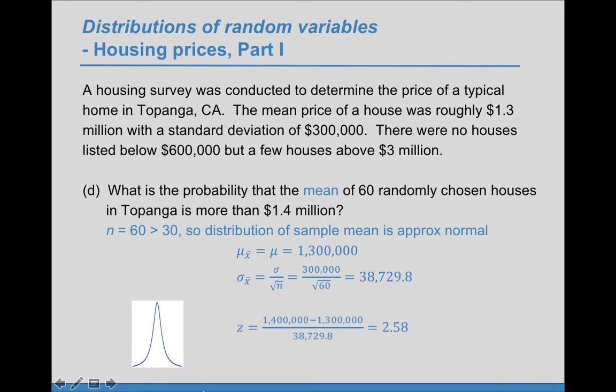Now we're ready for a z-score. It's going to be the value of interest, $1.4 million, minus the $1.3 million, which is the mean, and then divided by this standard deviation. This gives us a z-score of 2.58.